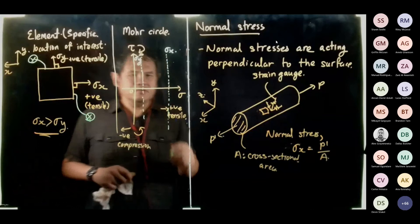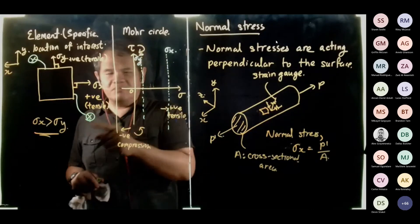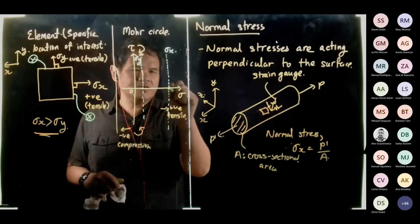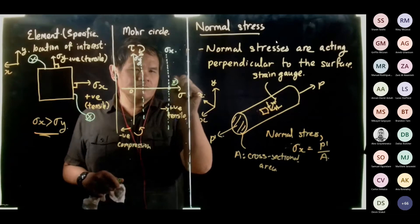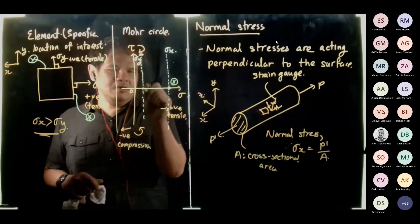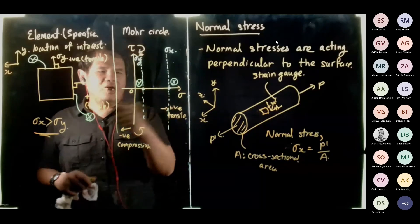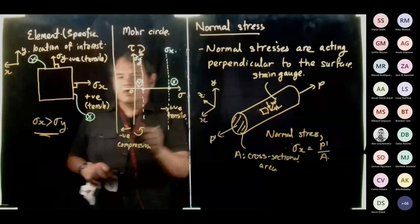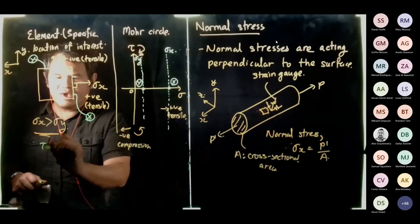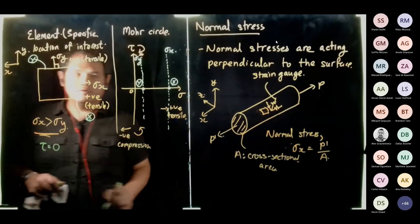Point x on the element, on Mohr circle, point x is over here. And then on the other side, point y is over here. Why is it on the zero line? Because the shear stress on this element is equal to zero.